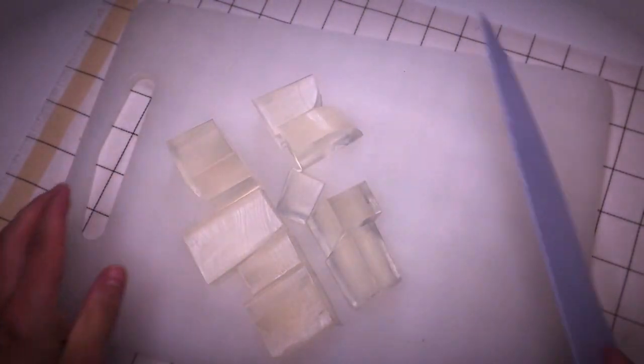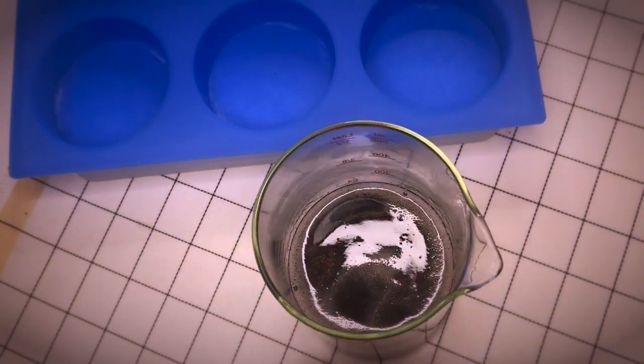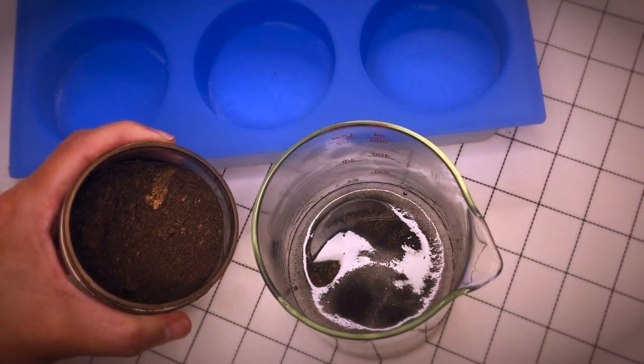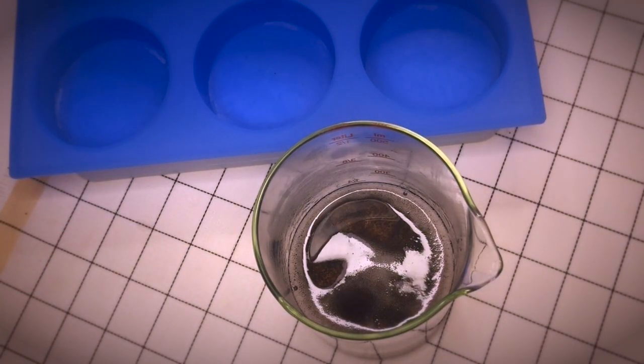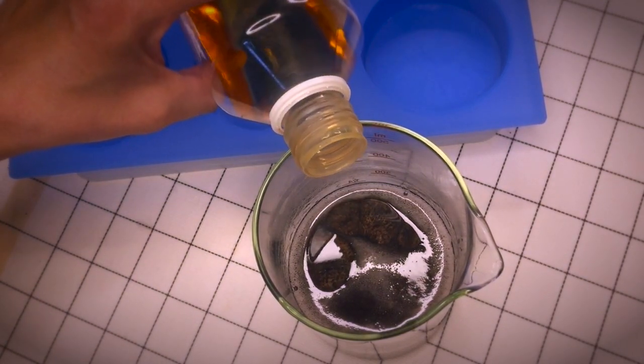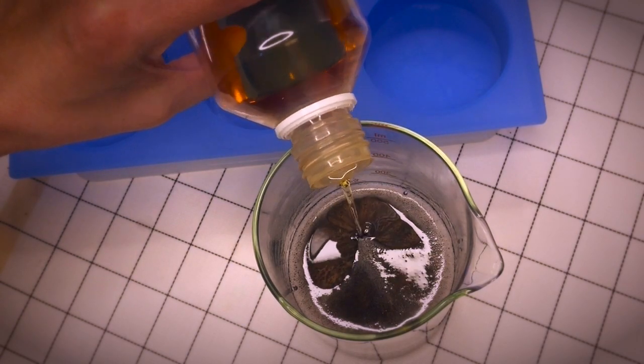Our melt and pour is completely melted and I already added some chestnut brown mica. I love this pearly kind of look that this mica gives to the melt and pour. Now I'm adding a fragrance oil. This one is called espresso and it comes from Brambleberry. Mix well to incorporate the fragrance.